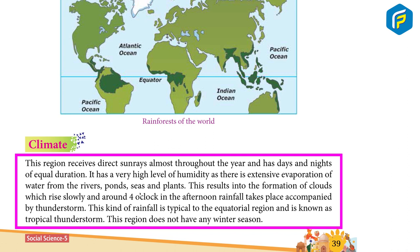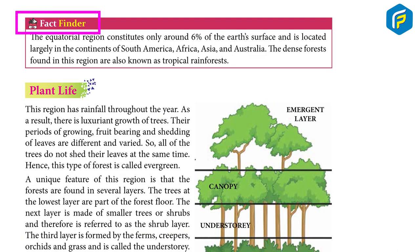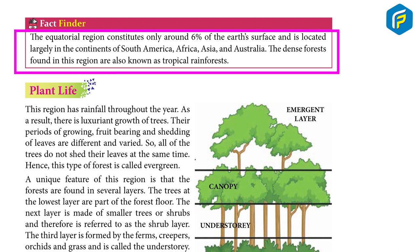This kind of rainfall is typical to the equatorial region and is known as tropical thunderstorm. This region does not have any winter season. The equatorial region constitutes only around 6% of the Earth's surface and is located largely in the continents of South America, Africa, Asia, and Australia. The dense forests found in this region are also known as tropical rainforests.